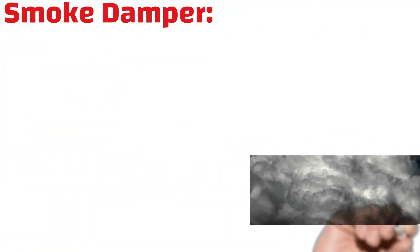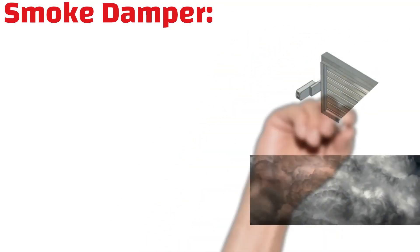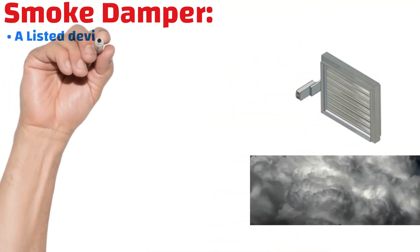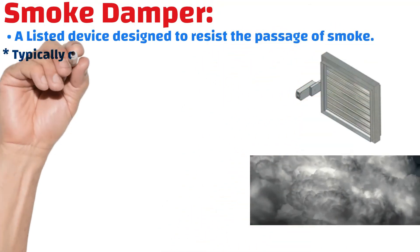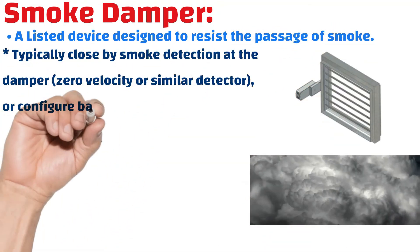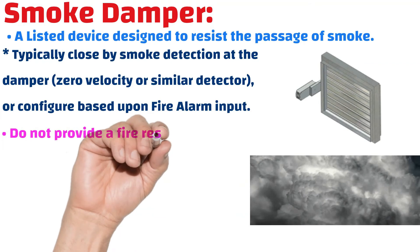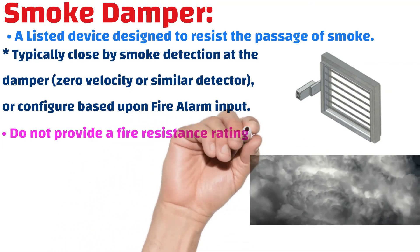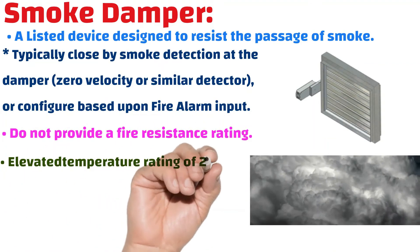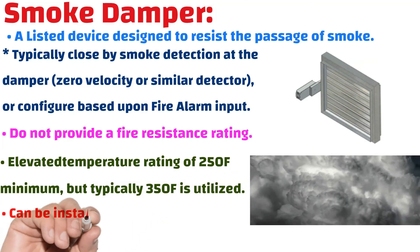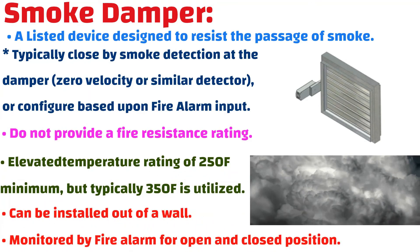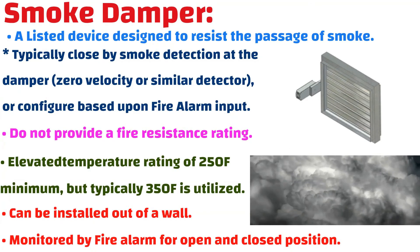What is a smoke damper? It is a listed device designed to resist the passage of smoke, typically closed by smoke detection at the damper or configured based upon fire alarm input. It does not provide a fire resistance rating. The elevated temperature rating is 250 degrees Fahrenheit minimum, but typically 350 degrees Fahrenheit is utilized. It can be installed out of a wall and is monitored by a fire alarm for open and closed position.